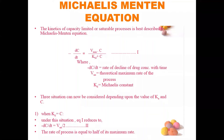The Michaelis-Menten equation can describe the kinetics of capacity-limited or saturable processes. The equation is: −dC/dt = (Vmax × C) / (Km + C), where −dC/dt is the rate of decline of drug concentration with time, Vmax is the theoretical maximum rate of the process, C is the plasma drug concentration, and Km is the Michaelis-Menten constant.